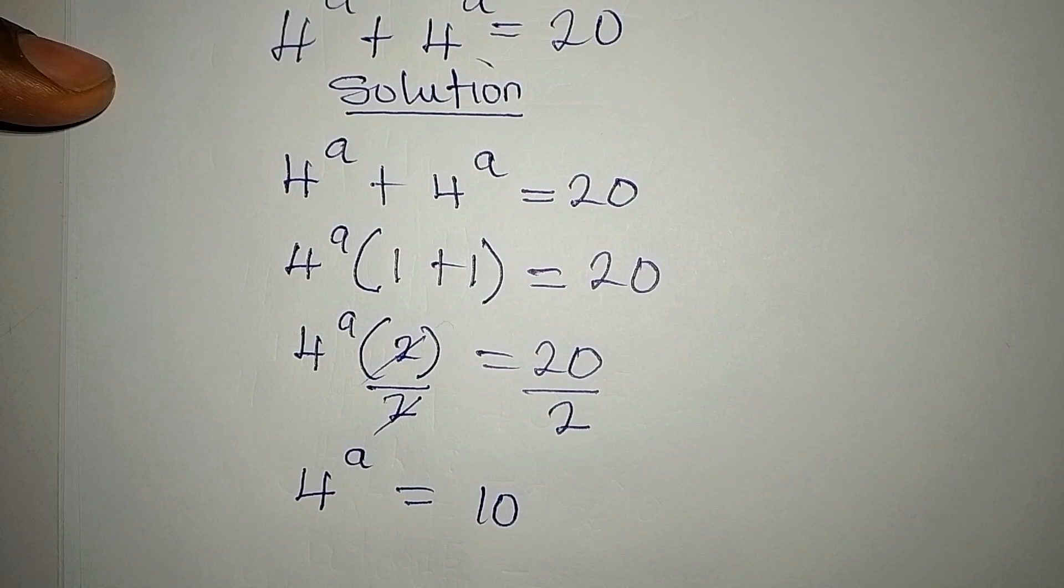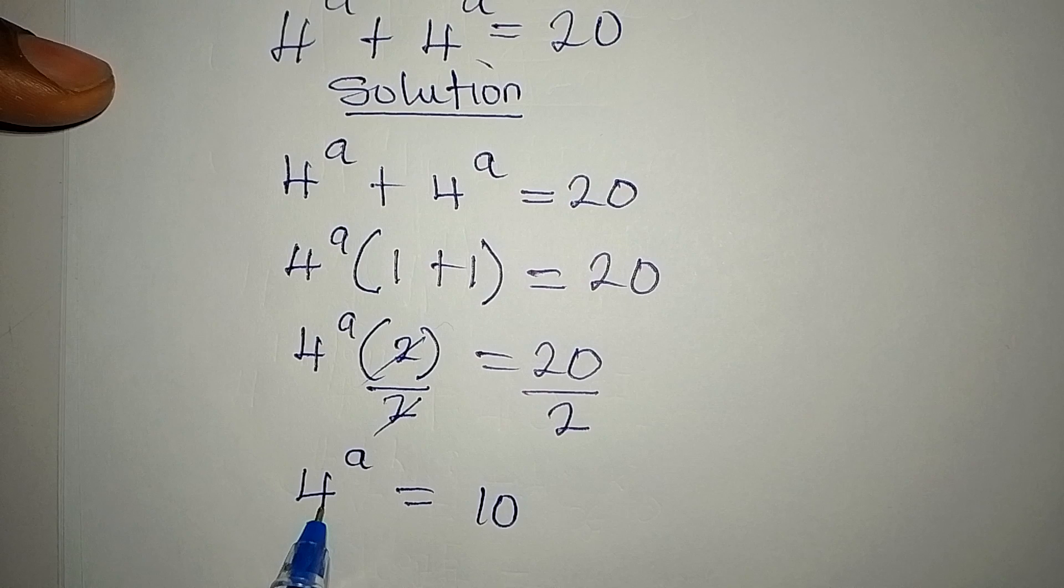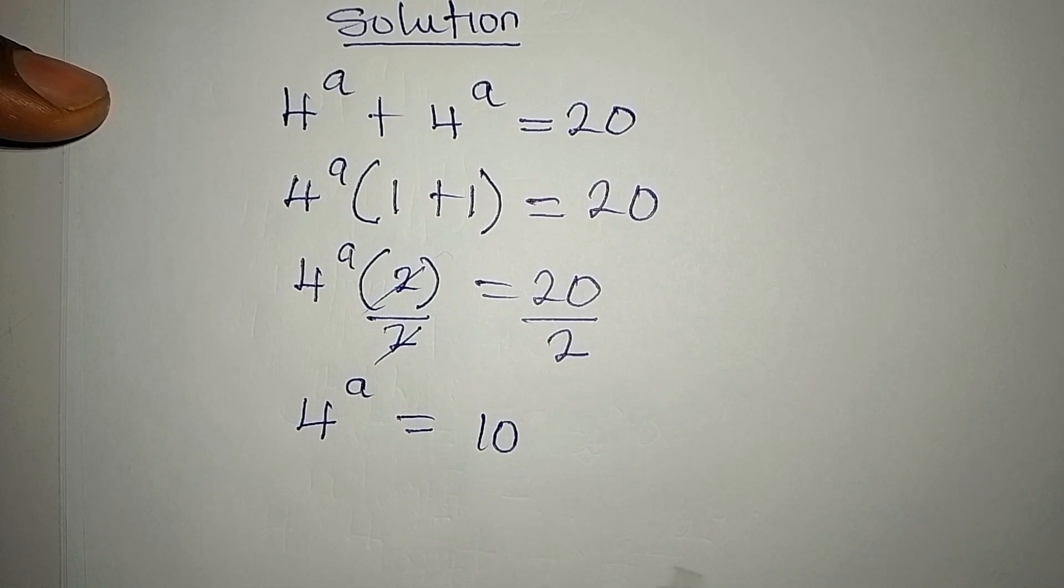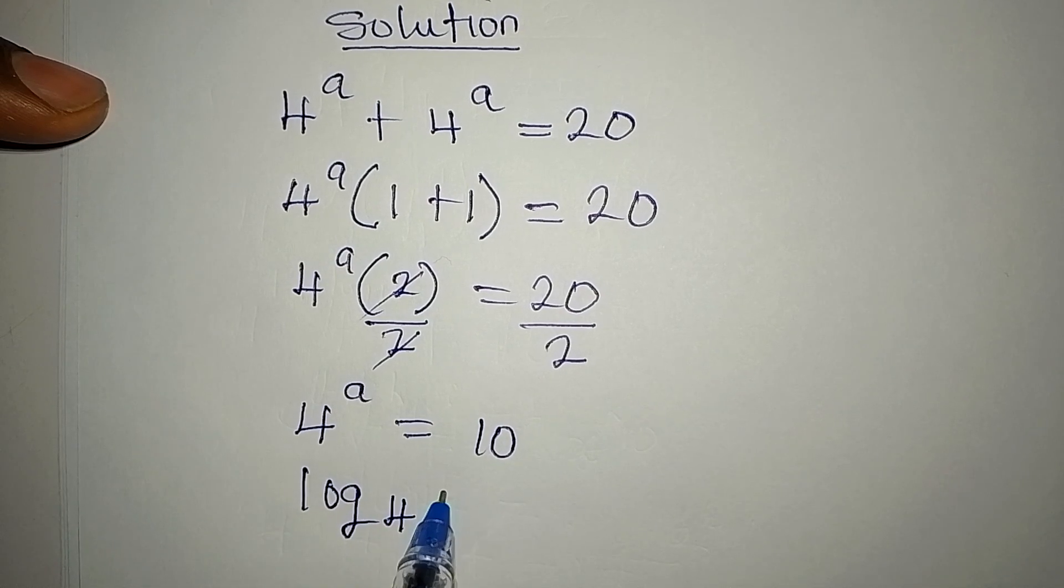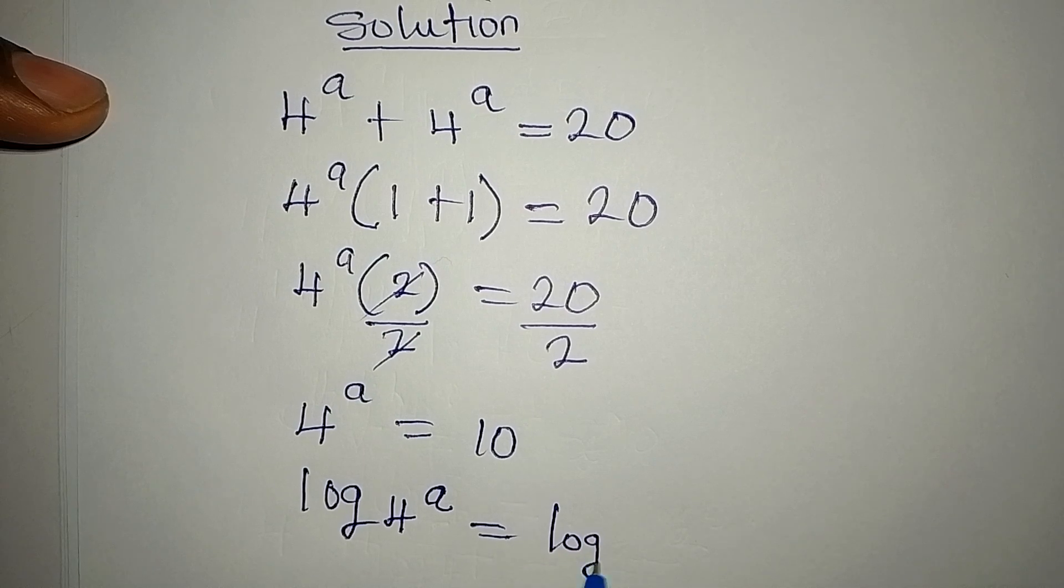Now you begin to look at this. Can we express 10 to have 4 as a base? It's not possible. That means you must take the log of both sides. So we have log 4 to power a equals log 10.